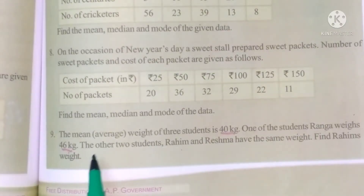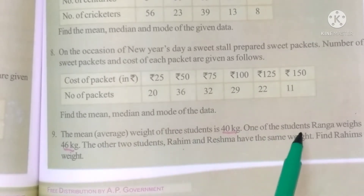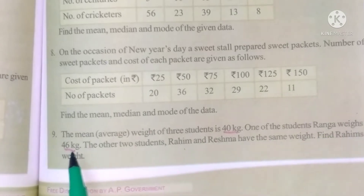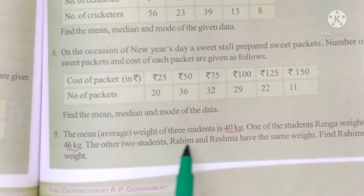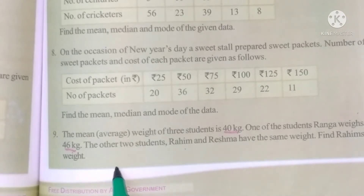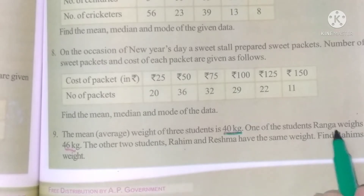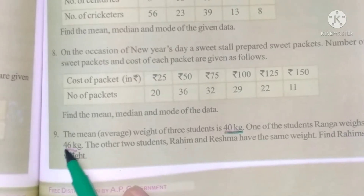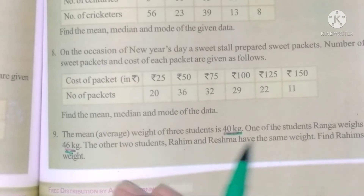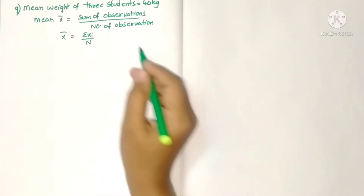Ninth problem: the mean average weight of three students is 40 kg. One of the students, Ranga, weighs 46 kg. The other two students, Rahim and Reshma, have the same weight. Find Rahim's weight. So here three students are there, and we want to find out Rahim's weight.